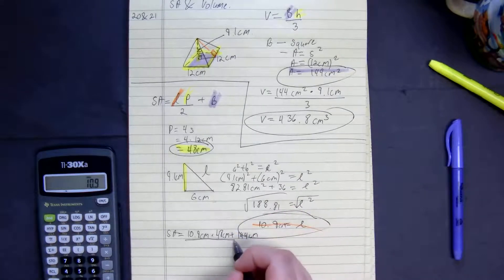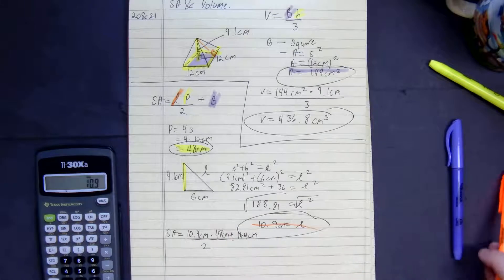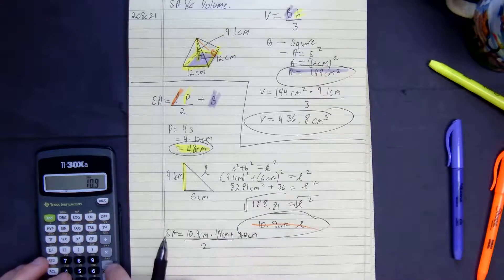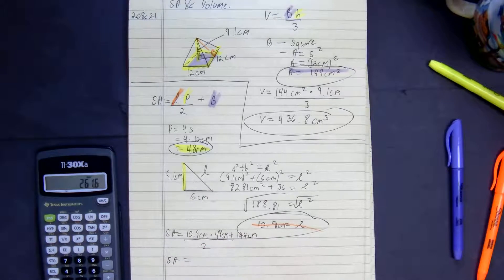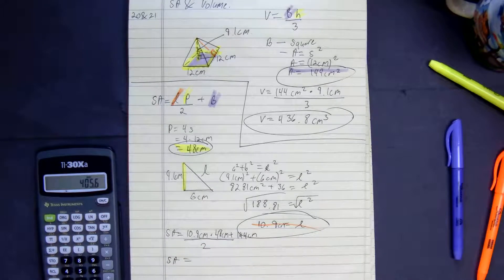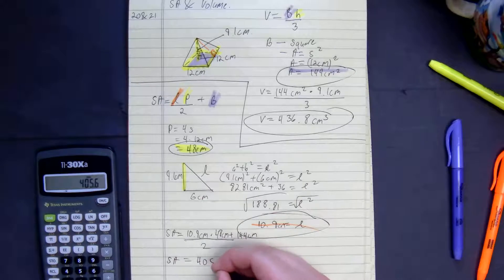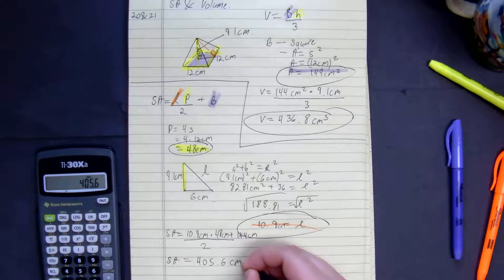And don't forget, we're dividing this by 2 because it's triangle. So 10.9 times 48 divided by 2. The surface area is equal to, and then add 144, 405.6 centimeters squared.